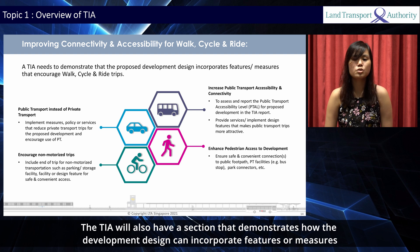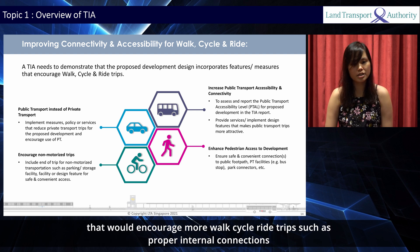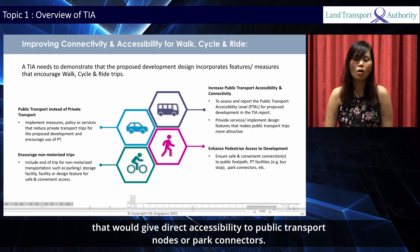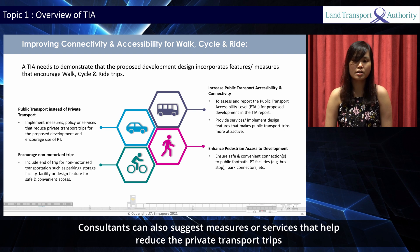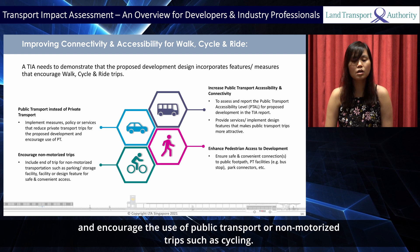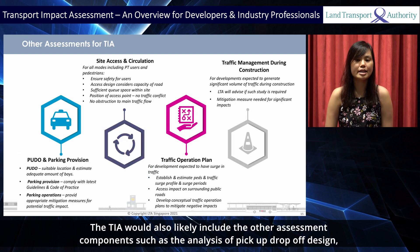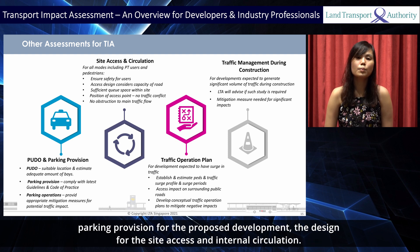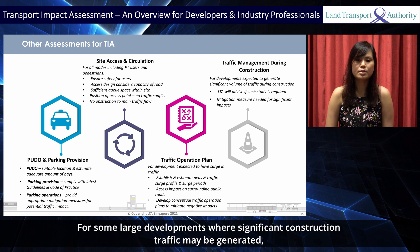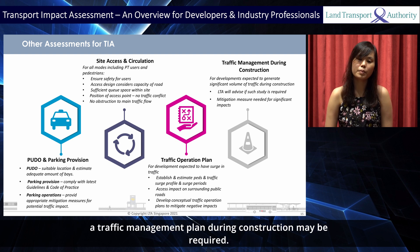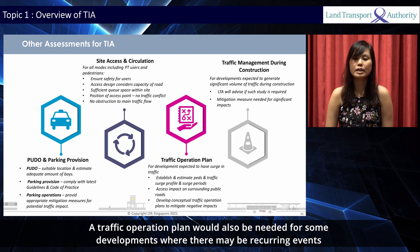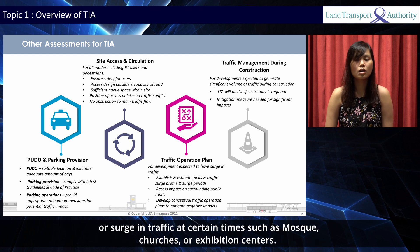The TIA will also have a section that demonstrates how the development design can incorporate features or measures that would encourage more walk-cycle-ride trips, such as proper internal connections that would give direct accessibility to public transport nodes or park connectors. Consultants can also suggest measures or services that help reduce private transport trips and encourage the use of public transport or non-motorised trips such as cycling. The TIA would also likely include other assessment components such as the analysis of pickup drop-off design, parking provision for the proposed development, and the design for the site access and internal circulation. For some large developments where significant construction traffic may be generated, a traffic management plan during construction may be required. A traffic operation plan would also be needed for some developments where there may be recurring events or surges in traffic at certain times, such as mosques, churches or exhibition centres.